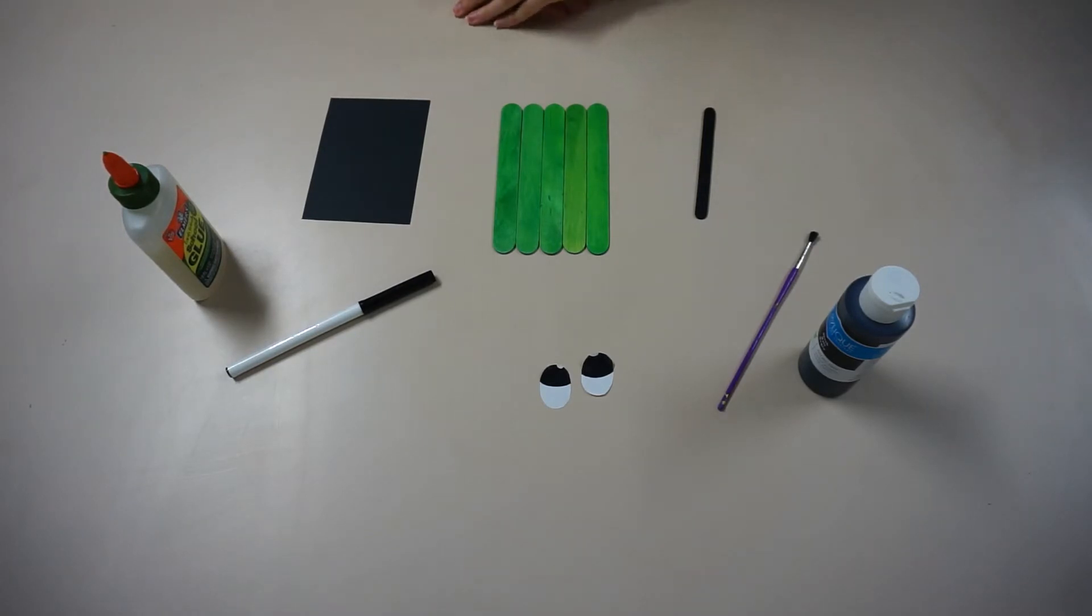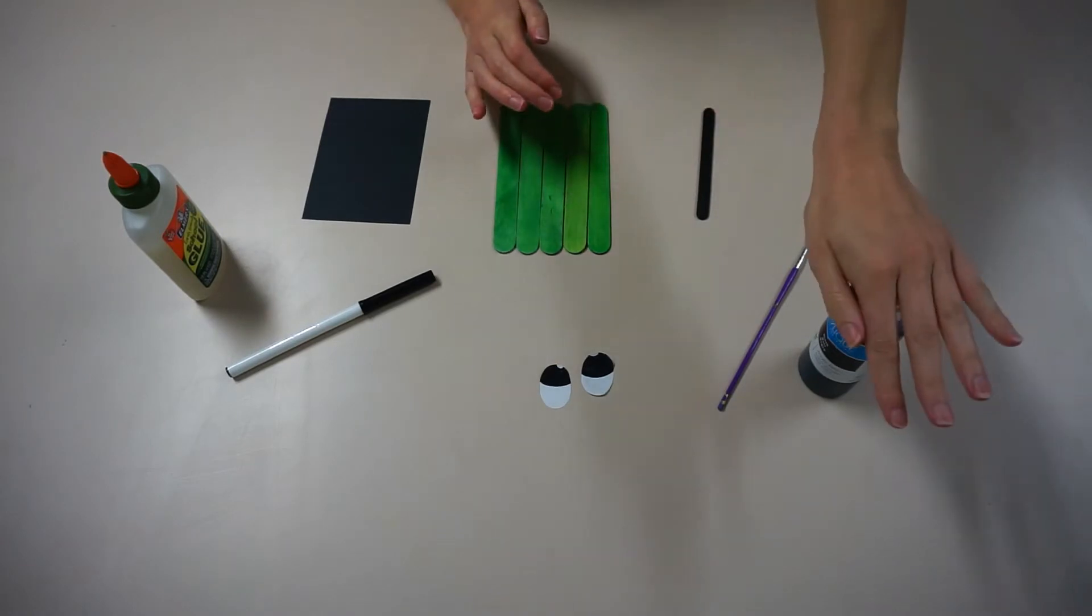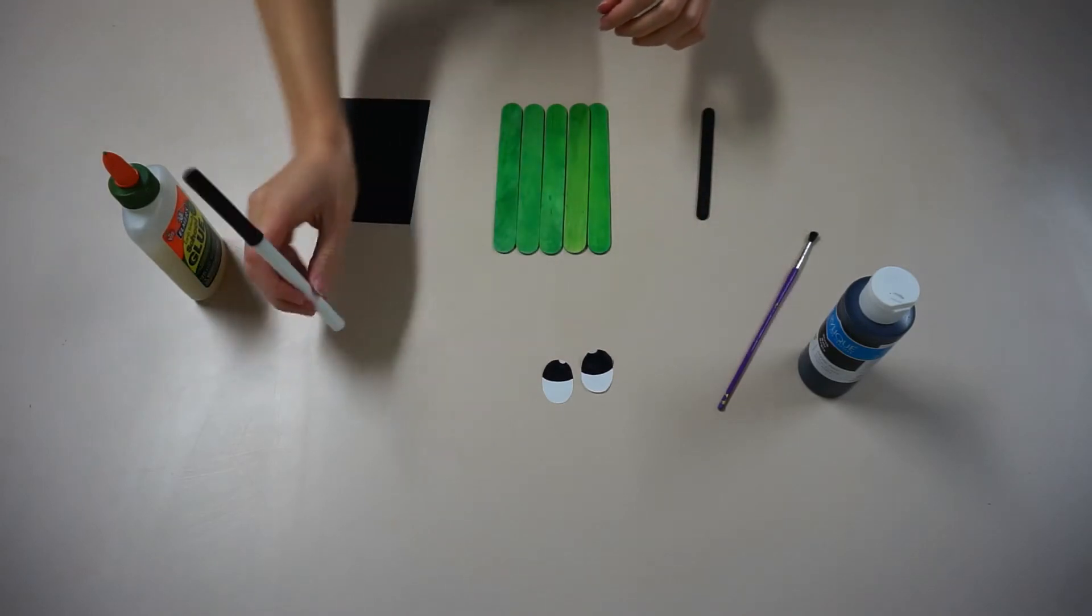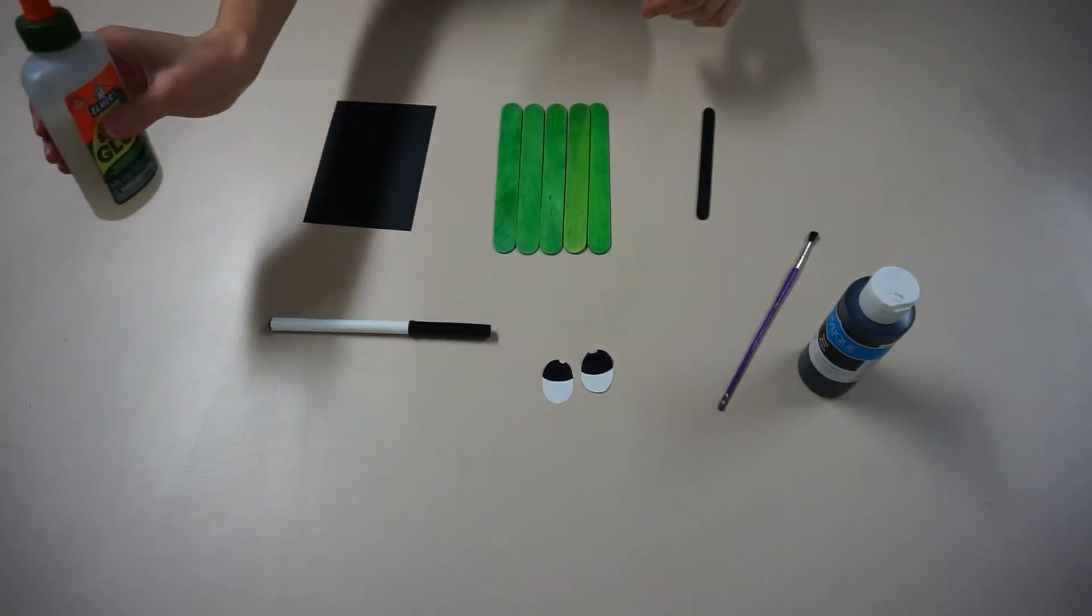All you need is some popsicle or craft sticks, green and black paint, some white paper to make your eyes, a black marker, a piece of cardboard, and some glue.